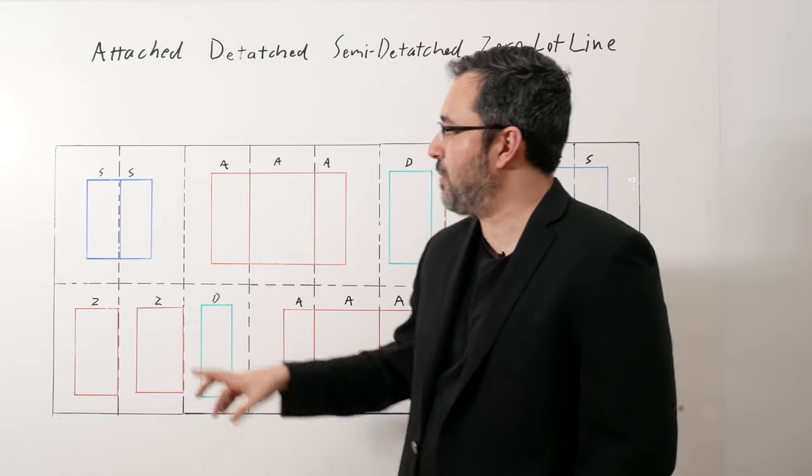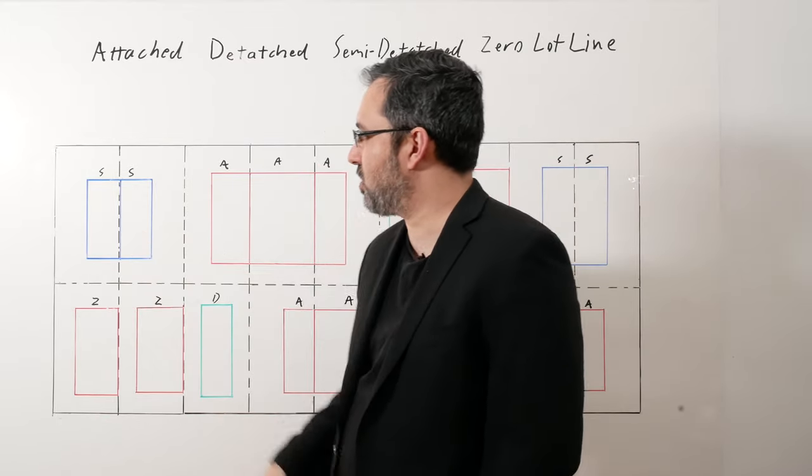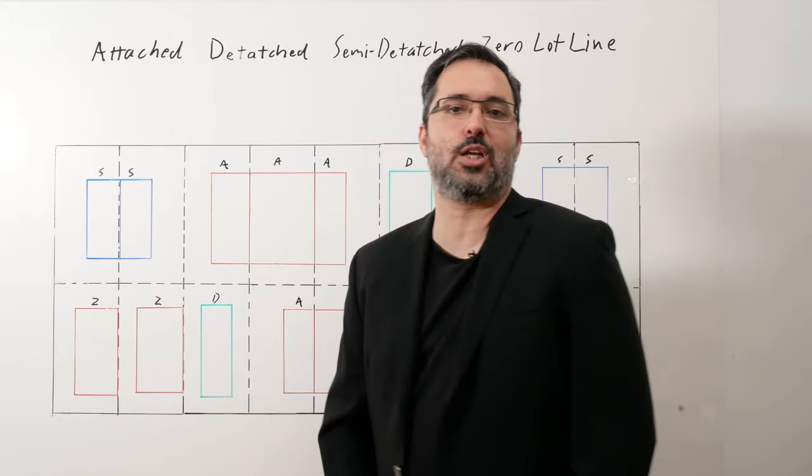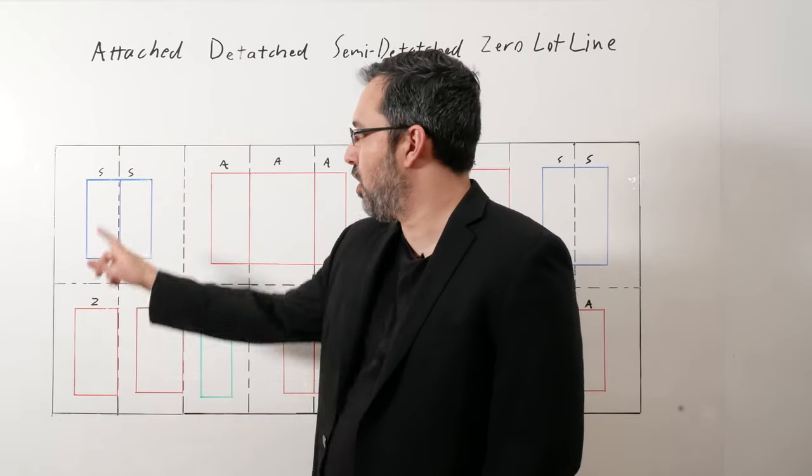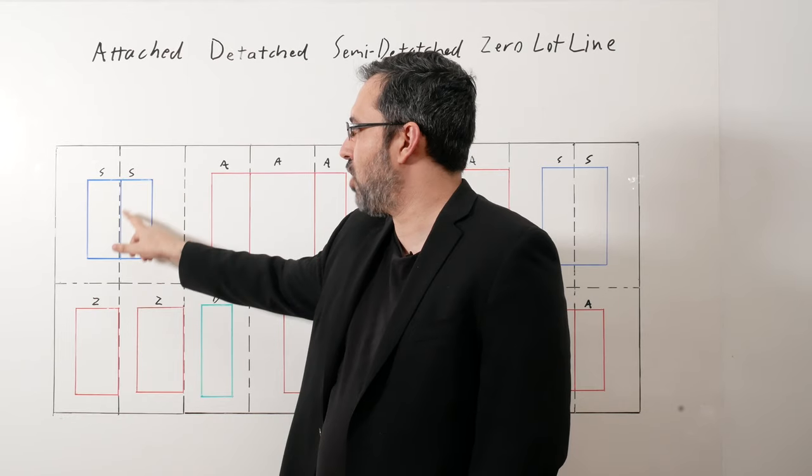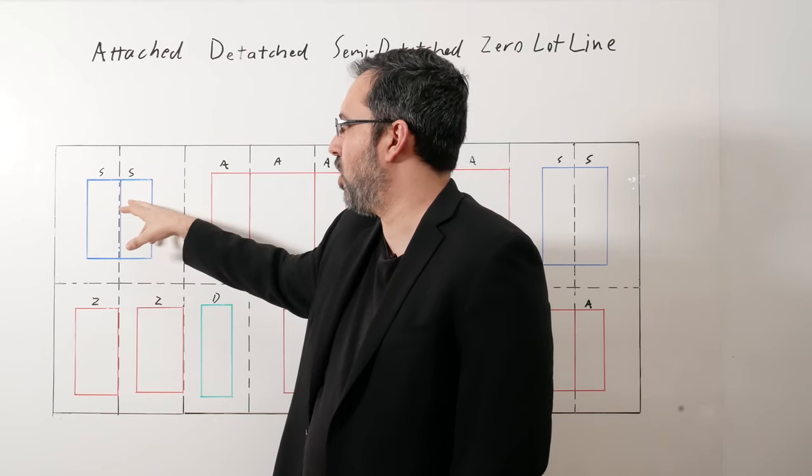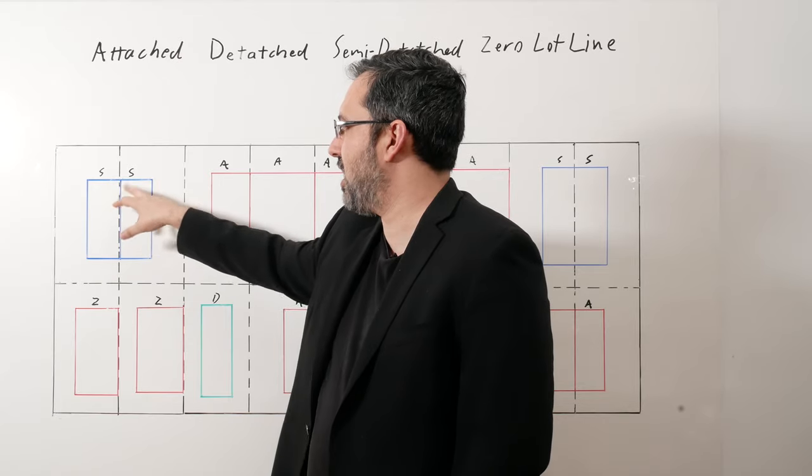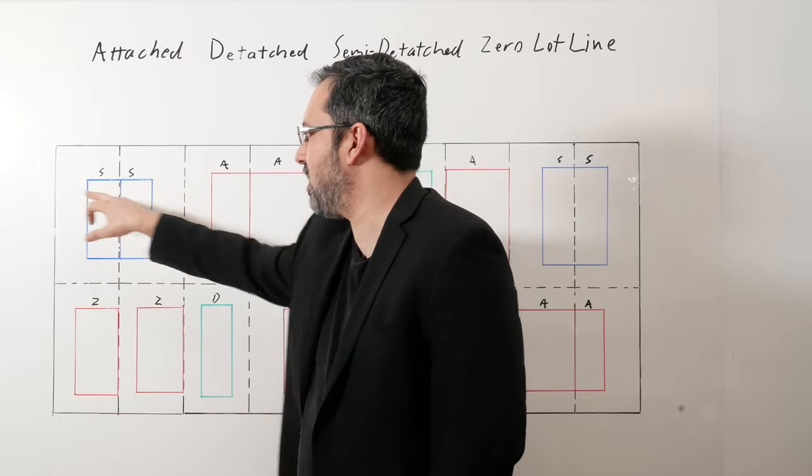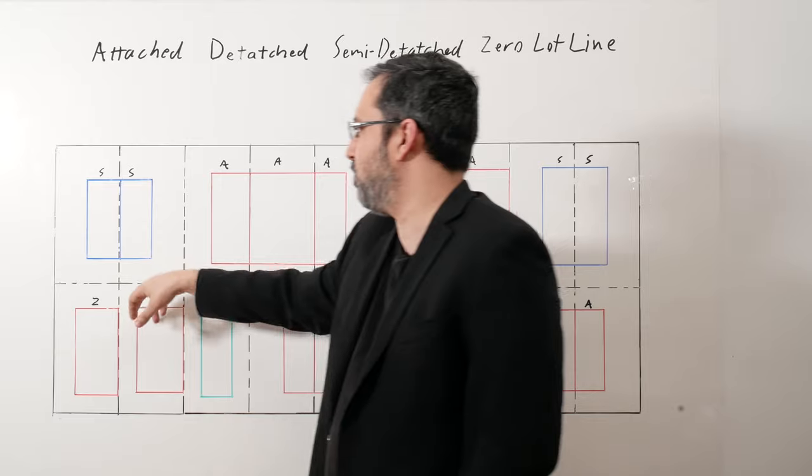I'm going to run through it. So semi-detached. This is the one that people get most confused about—it's always in a pair. Never in a group. They're attached in the middle on one property line, or it could be two buildings on one property, but they're attached down the middle and yards on both sides, and none in the middle.